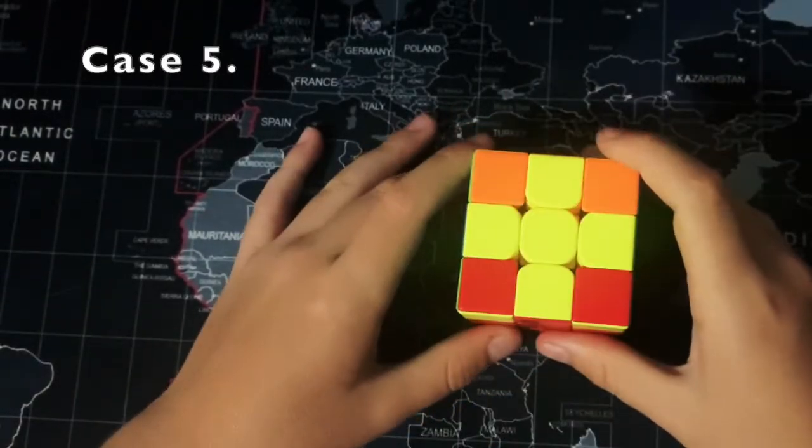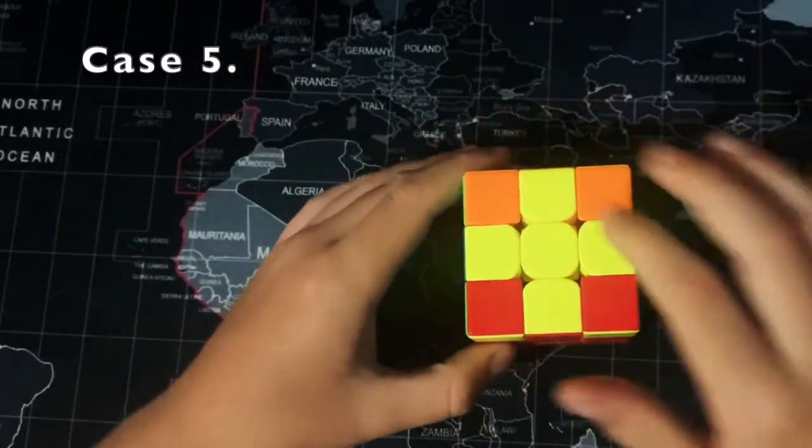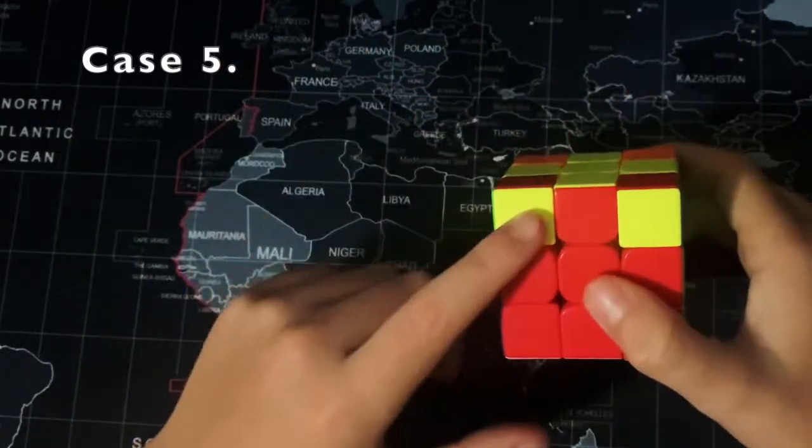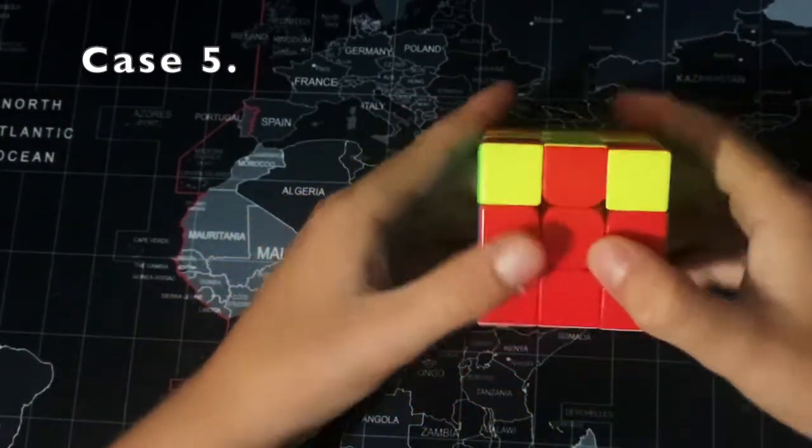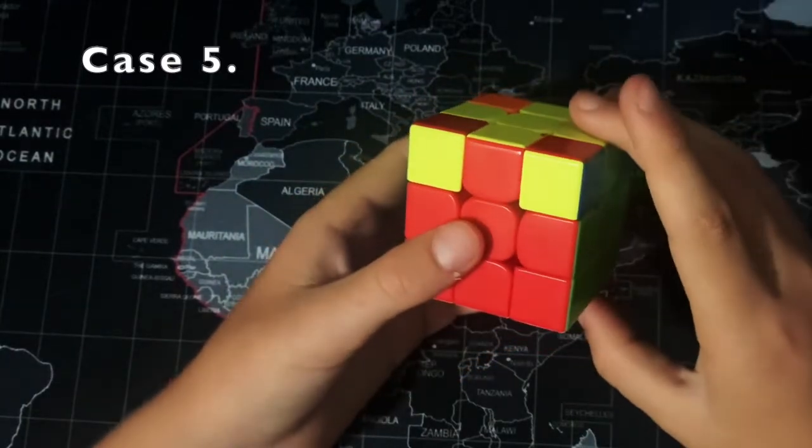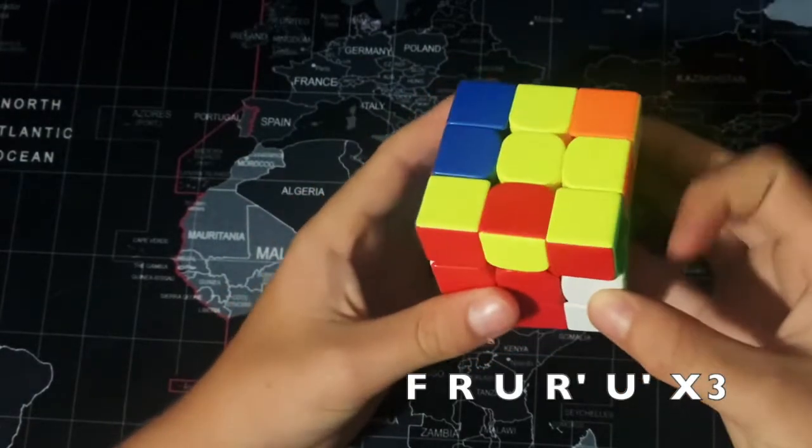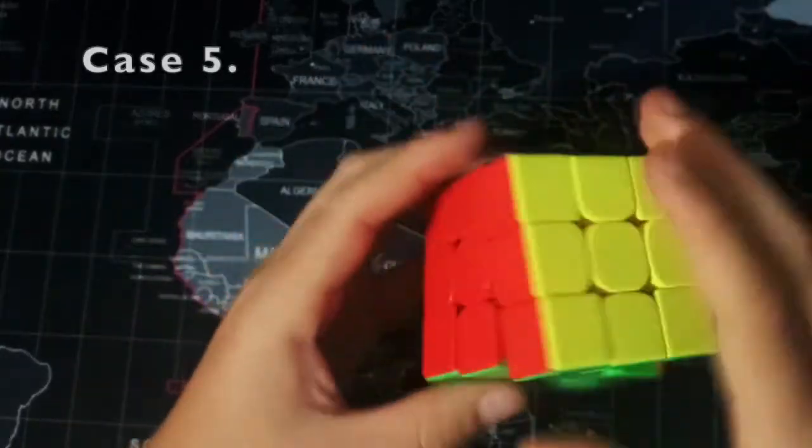Onto our next algorithm. This time it's just a yellow cross, or whatever color cross yours is, on the top. And now it's got two over here and two over here. You want to hold it like this, facing you, and that at the back. You want to do F', R', U', U' and just repeat that three times. And there you go, guys.